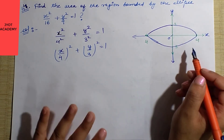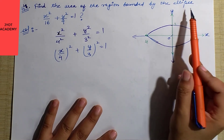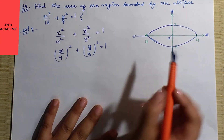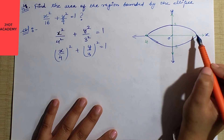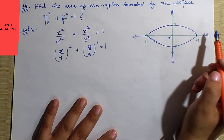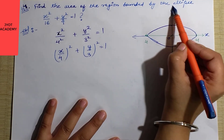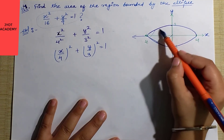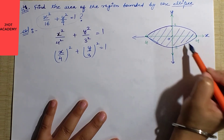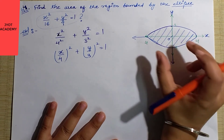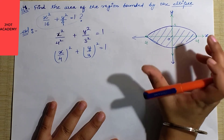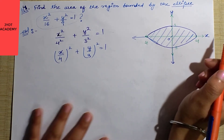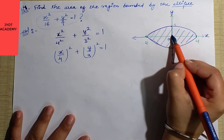We have to find the area of the region that is completely bounded by this ellipse. If the question only asked for the first quadrant area, we would take only that portion. But since there is no such restriction, we need the complete ellipse region — the entire shaded area that I have drawn.